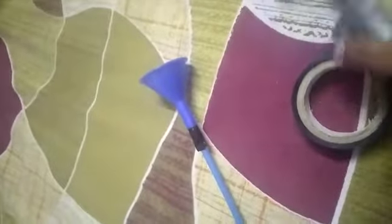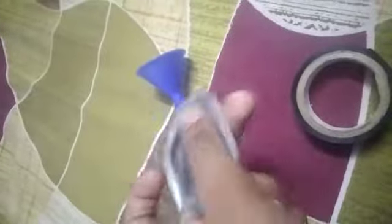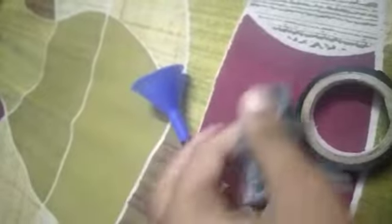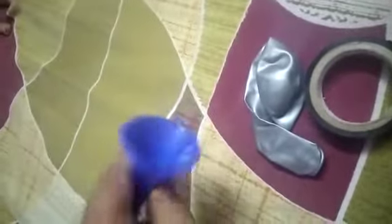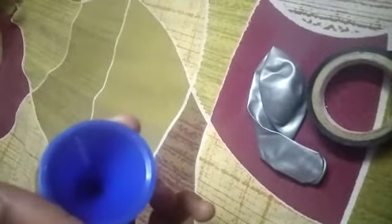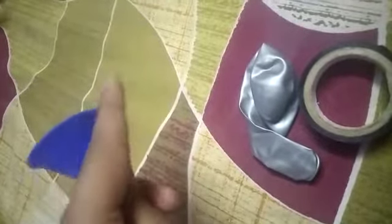After that, we have a very simple task. Cut the balloon and put it on top of the funnel. Then cover and secure it with tape.